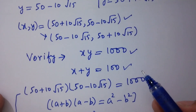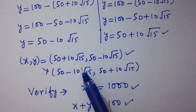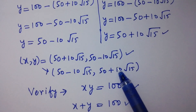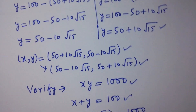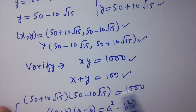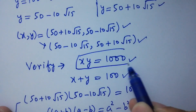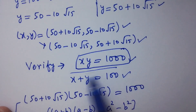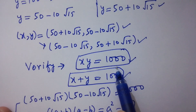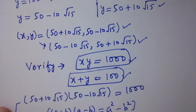This shows that the values of x and y — 50 plus 10 square root of 15 and 50 minus 10 square root of 15 — satisfy both equations: xy equals 1000 and x plus y equals 100. Thanks for watching this video. Please subscribe to this channel to get notifications of my new videos.